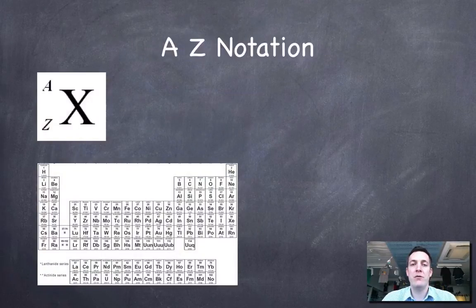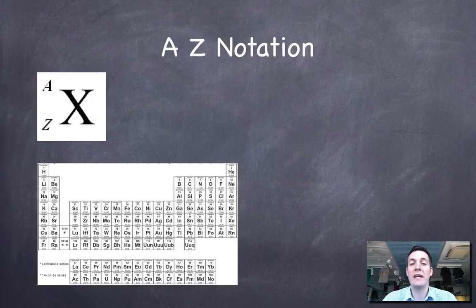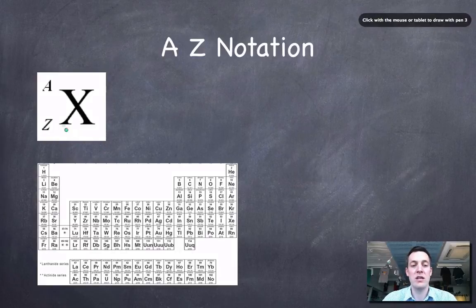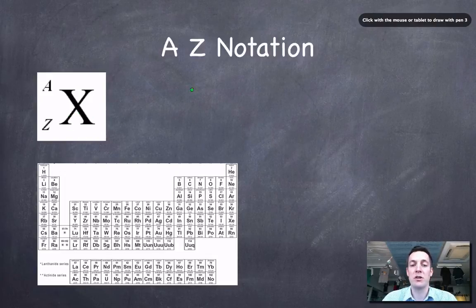Now, if we want to talk about how many of these different particles there are in an atom, it's quite handy to have a shorthand system of notation, which I'm going to call the AZ system, just because it uses the symbols A and Z. It also uses the symbol X. So X is the atomic symbol, the symbol of the element. For example, I might choose carbon, in which case X would be C.